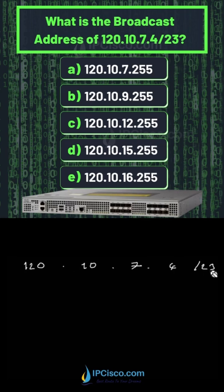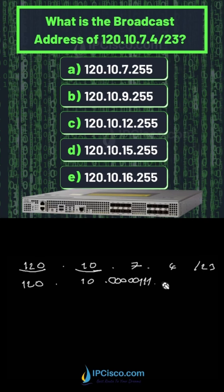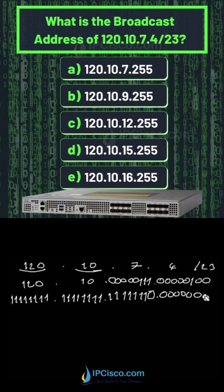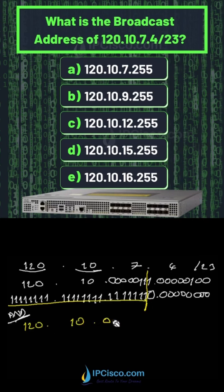First, we will write the IP address in binary format. I will not do this for the first two octets because it is not necessary for this question. After that, we will write the subnet mask in binary format too. We will use an AND operation between these two numbers, and as a result we will find the network address of this IP address.